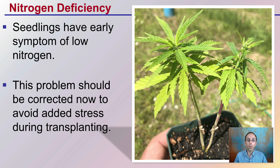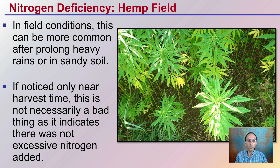Seedlings can have early symptoms of low nitrogen — we can see that here with yellowing of those older leaves and greening of the upper leaves. This problem should be corrected now to avoid stress during transplant. In field conditions, this can be more common after prolonged heavy rains, particularly in sandy soil, which will flush out a lot of that nitrogen. Here we see a hemp field where the bud regions and upper portion are green, but those lower regions definitely show that yellow coloration.